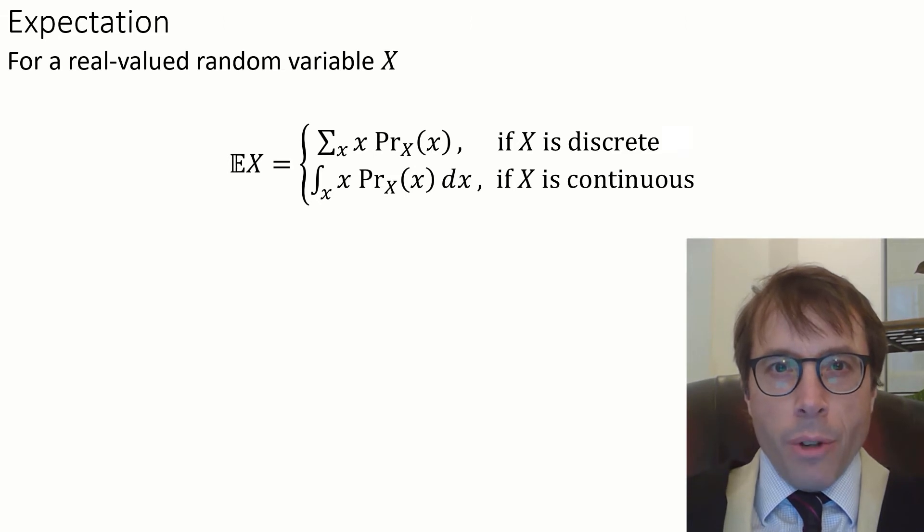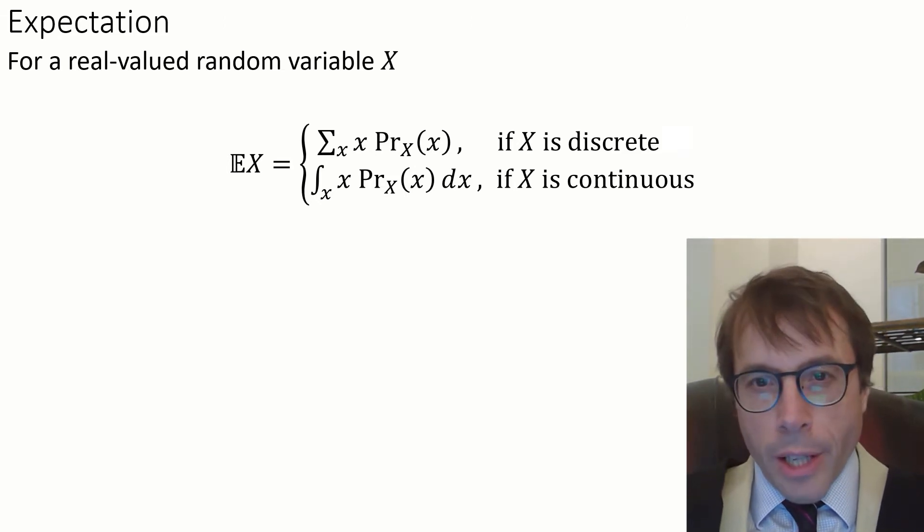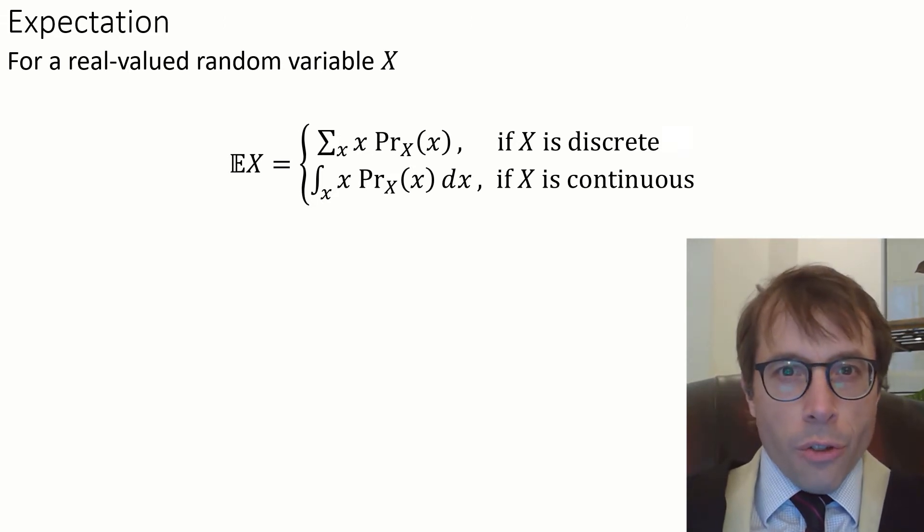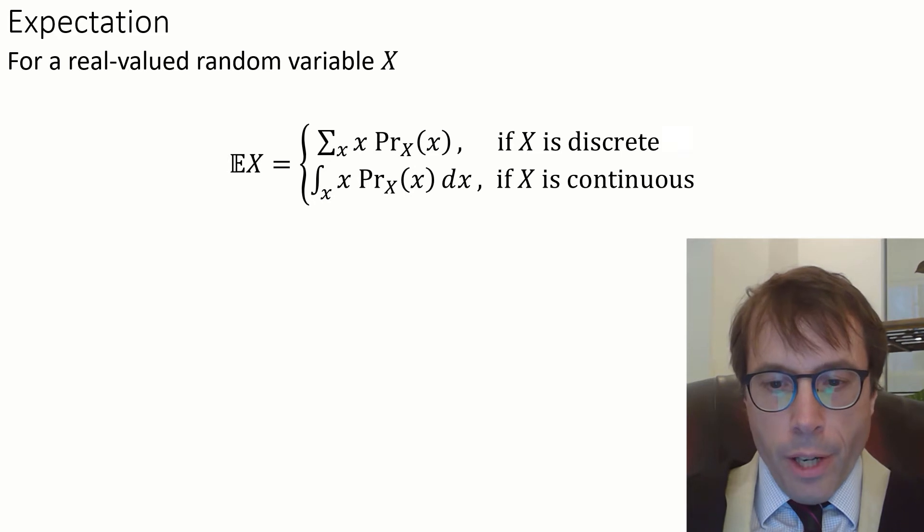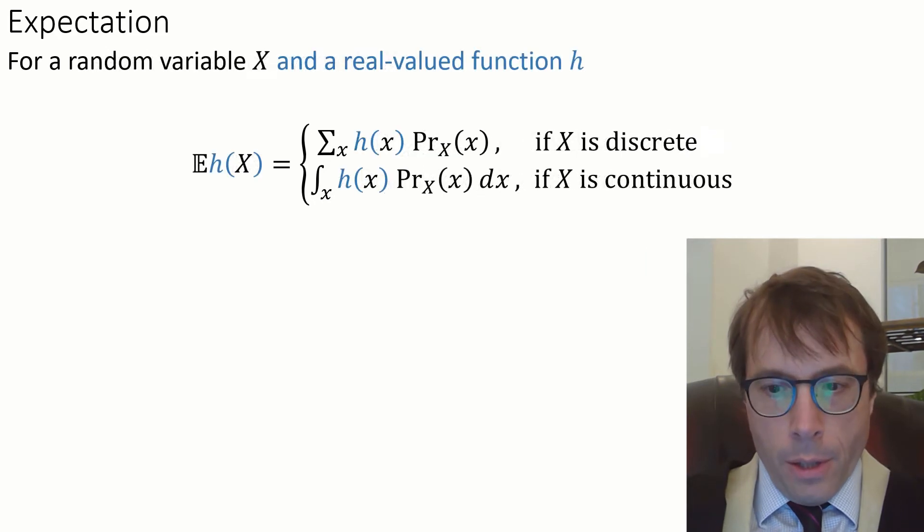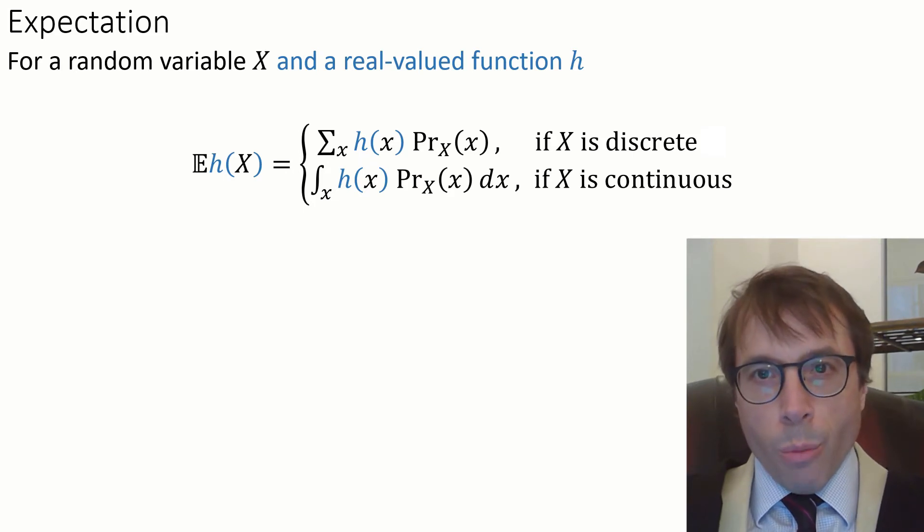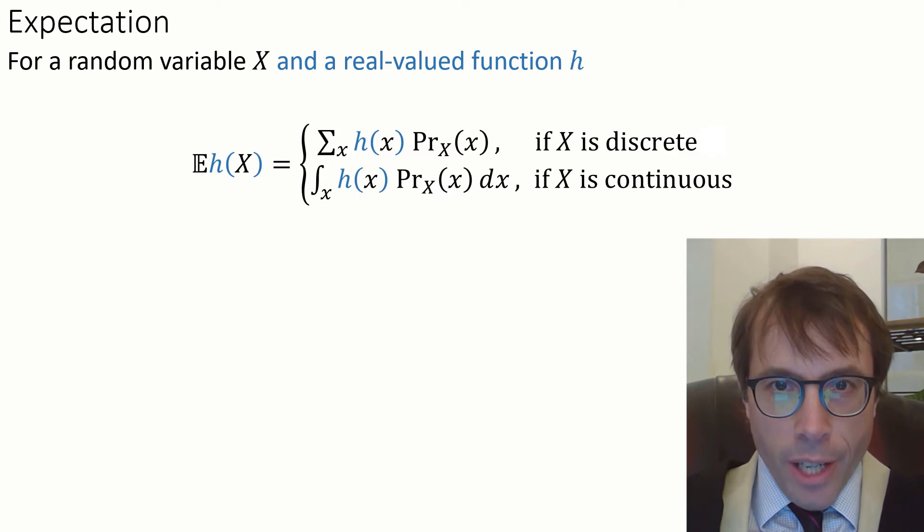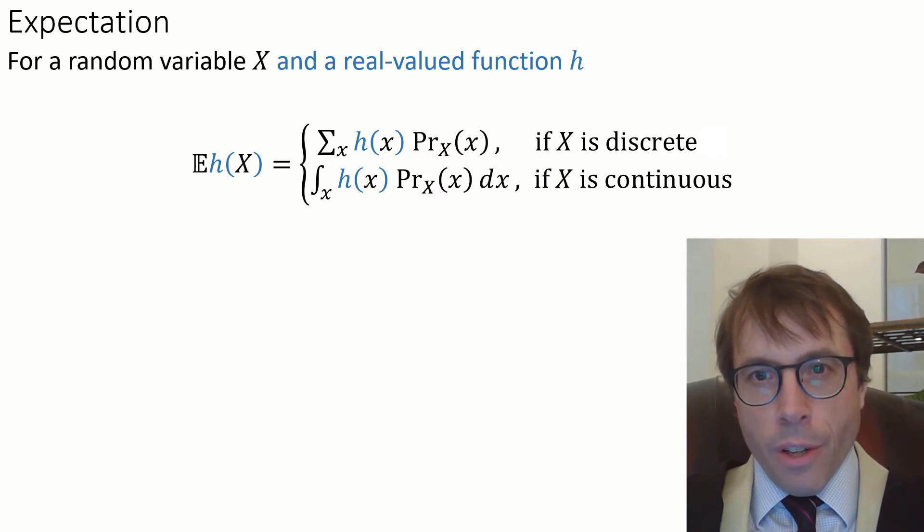But for interesting probability models we'd like to work with rich complicated random things like random faces or random text strings, so it's more useful to use a different version of expectation. Here x is an arbitrary random variable and h, we might call it the readout function, is a function that maps x to a real number. Then the expected value of h of x is given by the obvious sum or integral.